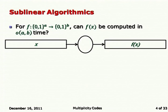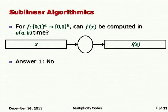If I give you a generic function mapping a bits to b bits, can this function be computed in time little-o of a and b? The obvious answer is no, but sub-linear time algorithmics changes the question so as to get the answer yes. The basic conditions are: rather than outputting a long string of length b, you ask whether you can determine any single coordinate of this output efficiently, eliminating b as a lower bound on running time.